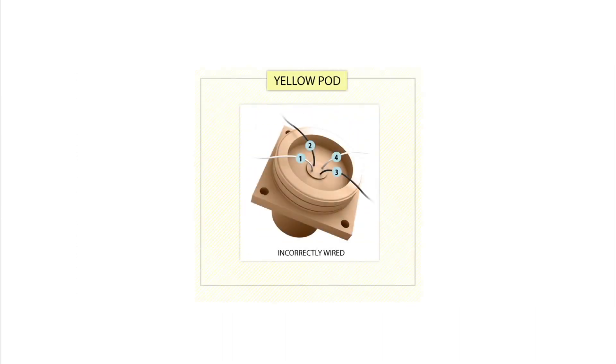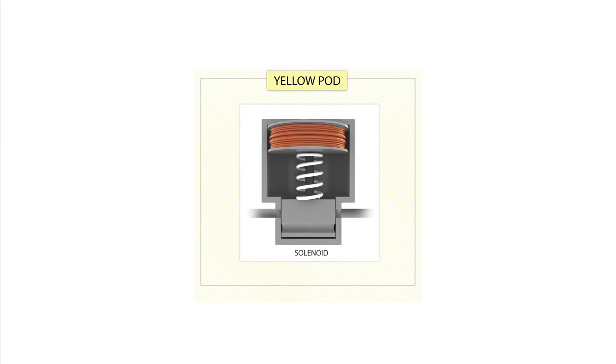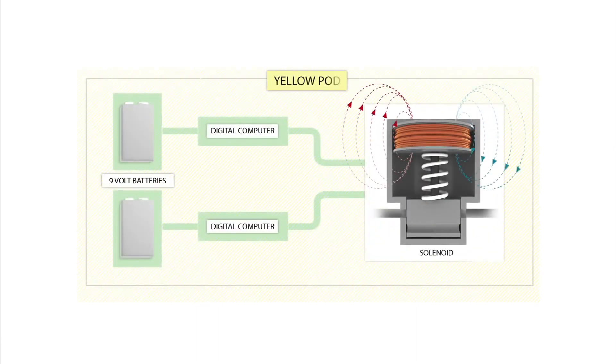And within the redundant Yellow Pod, the solenoid for the blind shear ram had been miswired. The solenoid valves were controlled by two coils of electrical wire. These two coils were designed to work in concert, generating a magnetic field strong enough to operate the valve. But within the miswired solenoid valve, the two coils actually opposed each other, leaving the valve paralyzed. Only a third unplanned failure allowed the Yellow Pod to operate. On the night of the accident, one of the 9-volt batteries that powered the solenoid valve's computer had failed. As a result, the affected computer system could not initiate the command to energize the miswired coil.